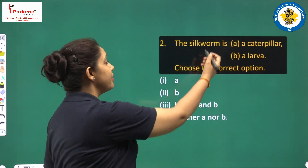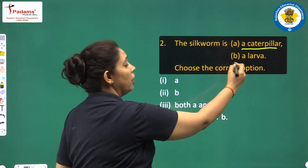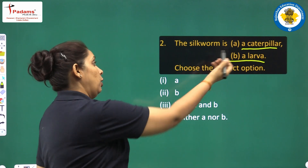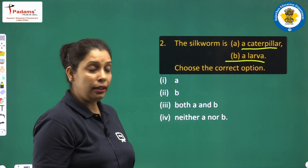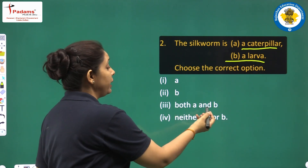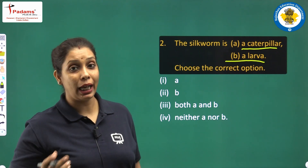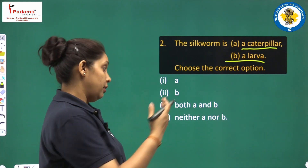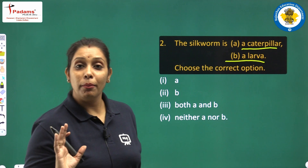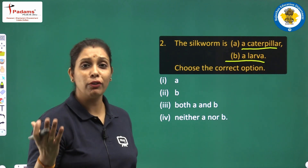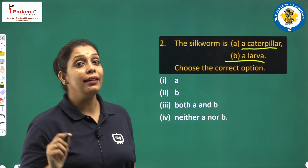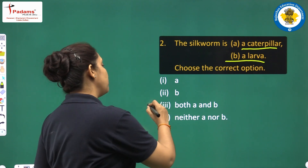Next question: the silkworm is — choose the correct option. Option A: is it a caterpillar only? Option B: is it a larva only? Option C: Both A and B. Option D: neither A nor B. Just revise what was taught in previous videos. Silkworm is both a caterpillar and a larva. So the right answer is option C, both A and B.